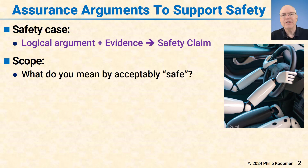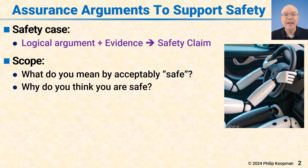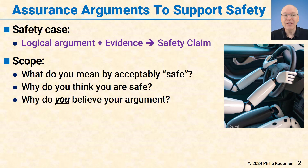The scope of a safety case needs to include at least the following to provide credible assurance of safety. First, it has to say what you actually mean by acceptably safe. Next, it has to say why it is that you think you're safe.